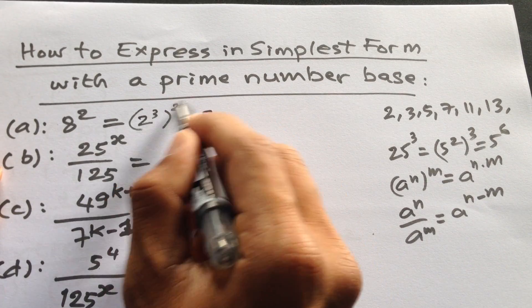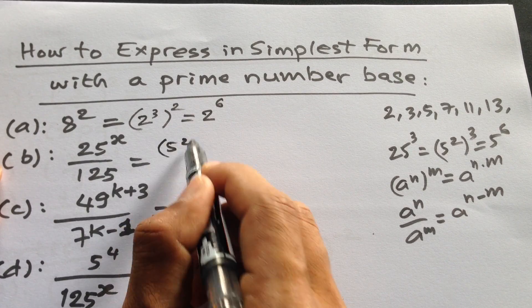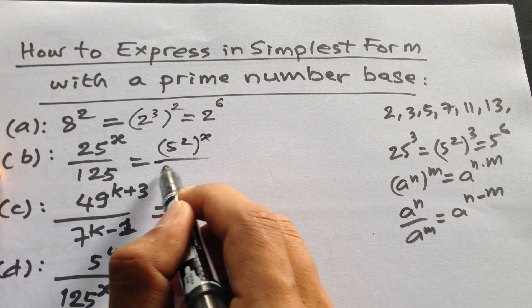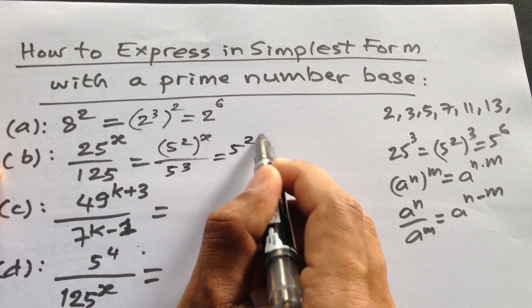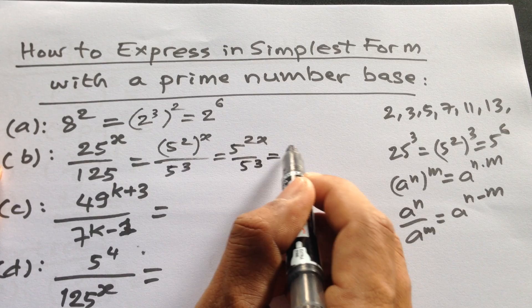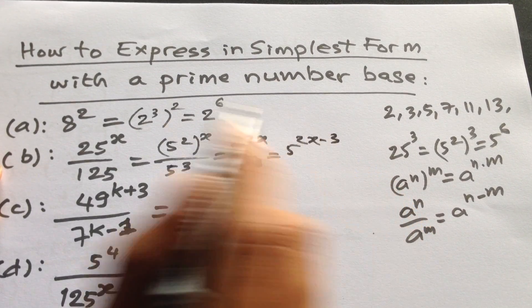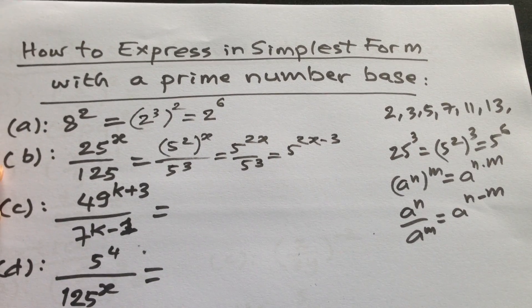So it is 2 to the power 3 times 2, which equals 6. For problem (b), we have 5 squared to the power x divided by 5 cubed. This is 5 to the power 2x divided by 5 to the power 3, which equals 5 to the power 2x minus 3. Because when we divide, we subtract the indices.